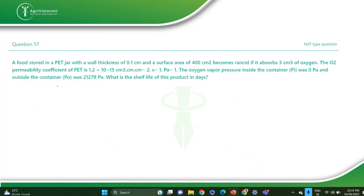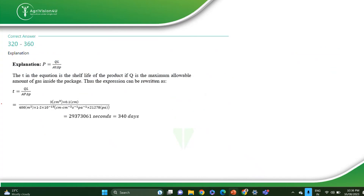The next question: food stored in a PET jar with thickness 0.1 cm and surface area 400 cm² absorbs 3 cm³ of oxygen. Oxygen vapor pressure inside the container is 0 Pascal, outside is 21,272 Pascal. Find the shelf life in days. Use the formula P = QL / (A × t × ΔP), rearranged to T = QL / (A × P × ΔP). Put all the values and convert the answer from seconds to days.